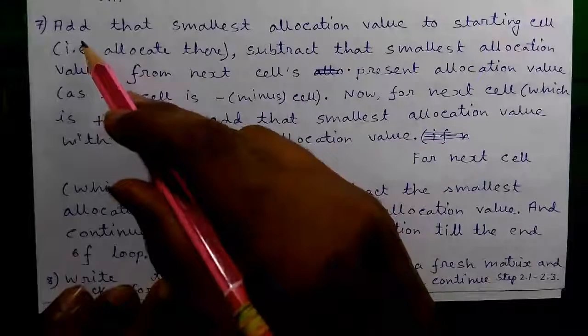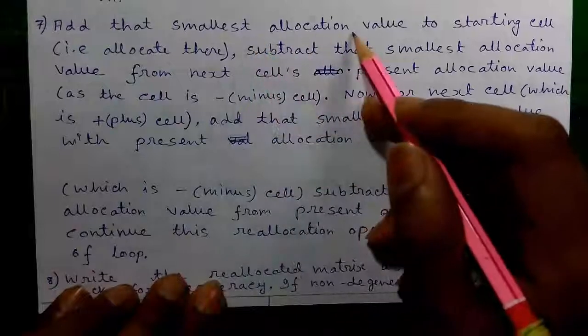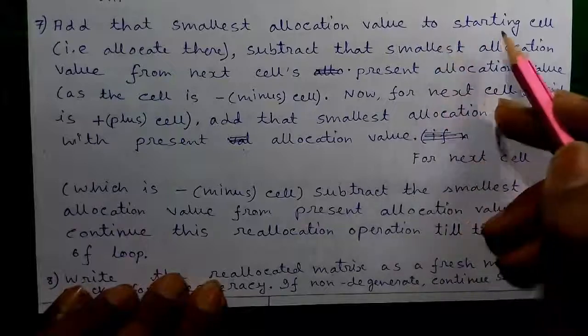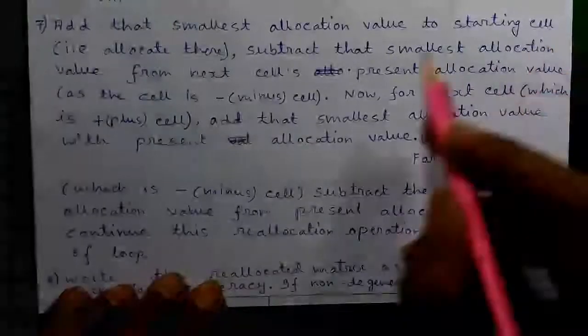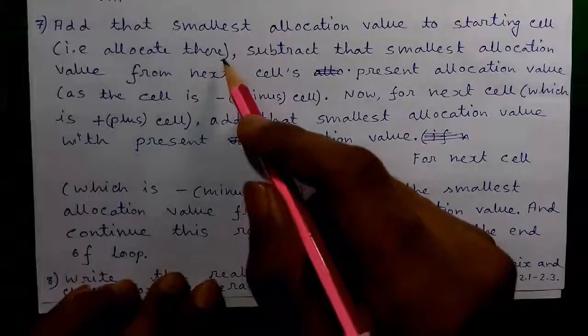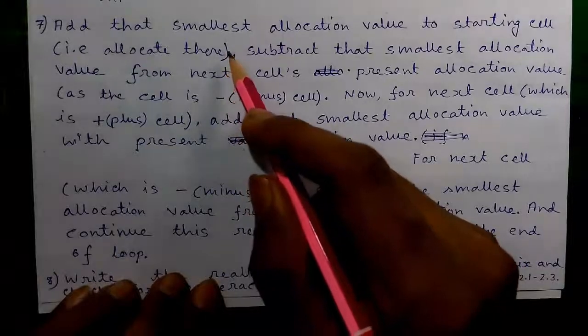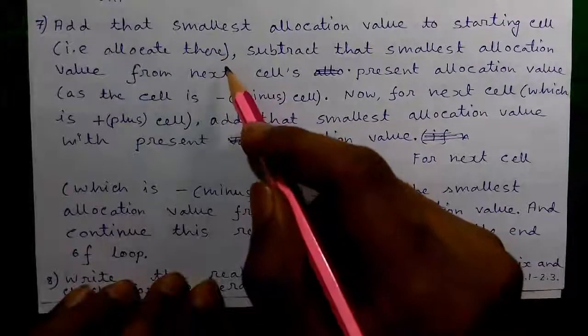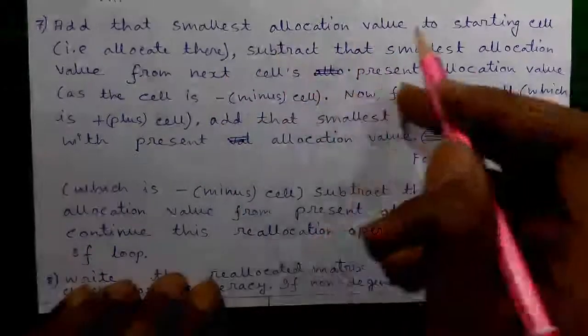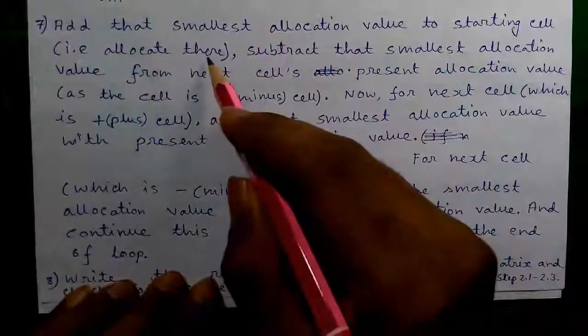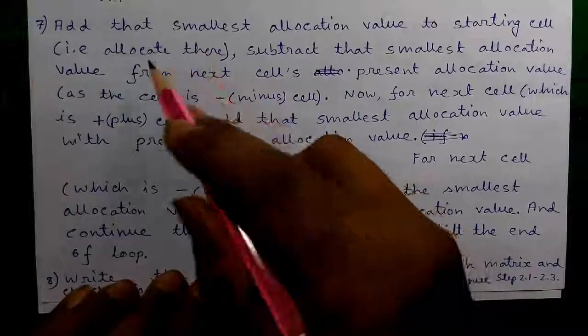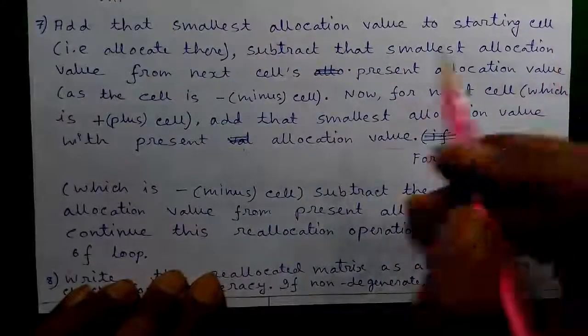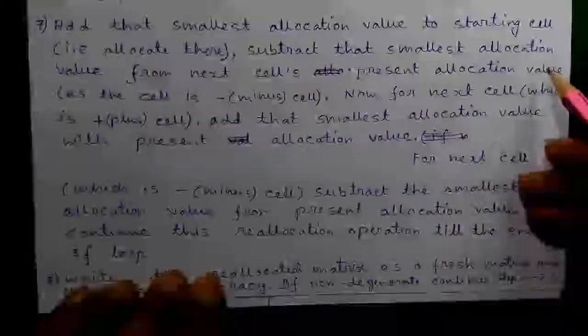Rule 7 - Add that smallest element which you earlier discovered. So add the smallest allocation cell value to the starting cell, that is allocate there. Remember the first cell from which the loop will originate must be an unallocated cell and we will allocate the smallest allocation value in that particular cell. Next subtract the smallest allocation value from the next cell's present allocation value.